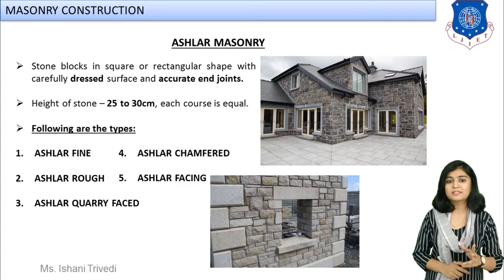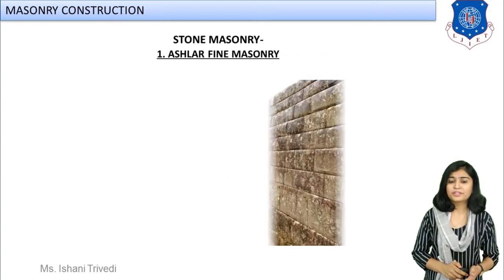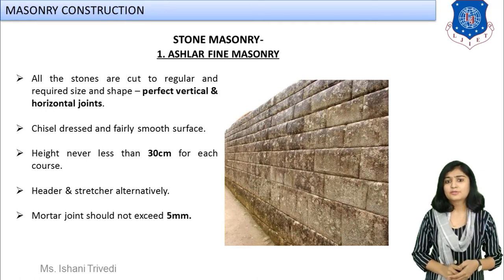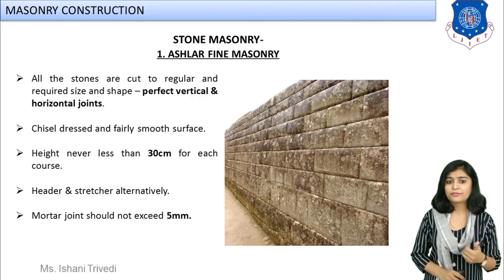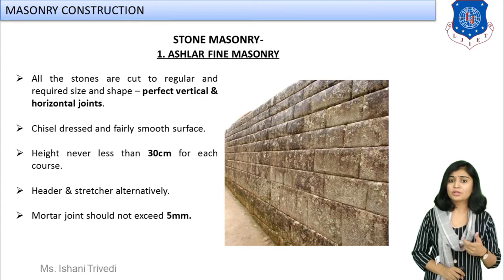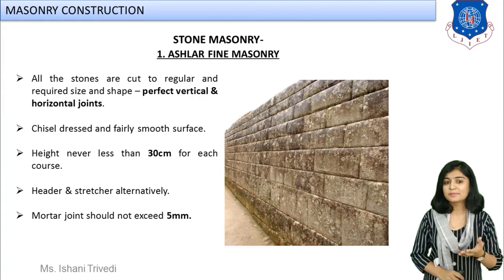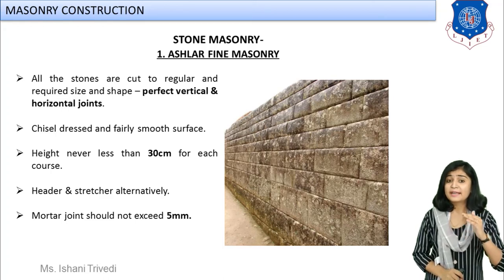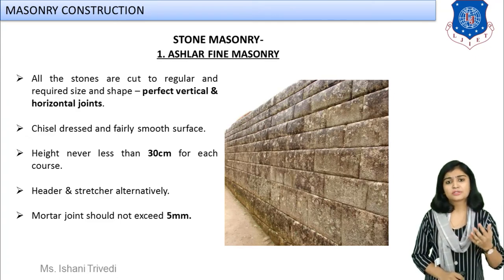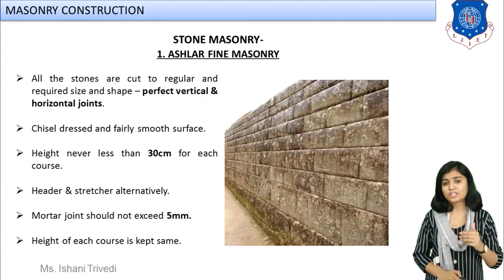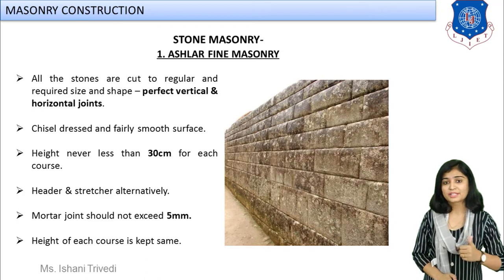The first type of ashlar masonry is ashlar fine-tooled masonry. Fine-tooled means the surface will be made smooth and fine. All the stones are cut to regular and required size and shape, they are perfectly vertical, and joints are perfectly horizontal. Each course will be made at least 30 centimeters, and the surface will also be made smooth. The mortar joint should not be greater than 5 mm. You can see how the joint width decreases in ashlar masonry construction.